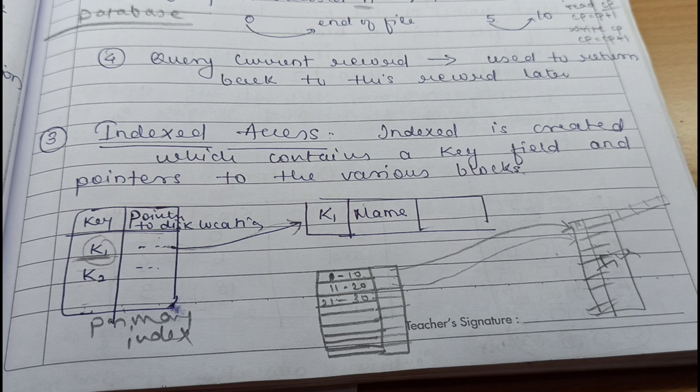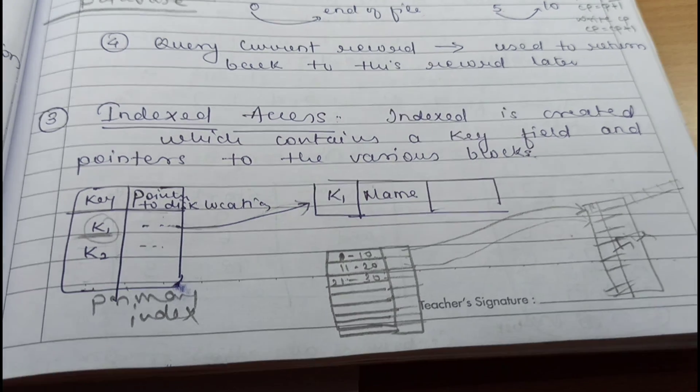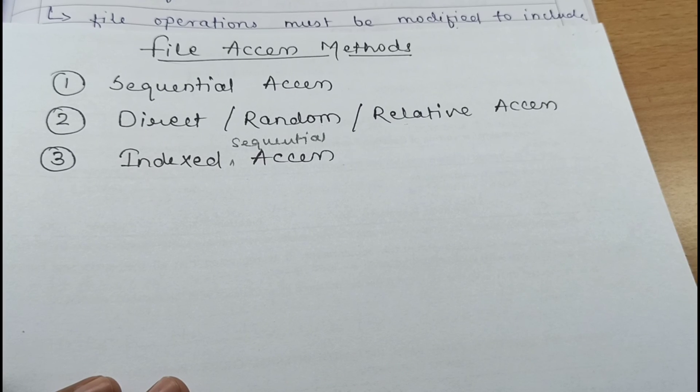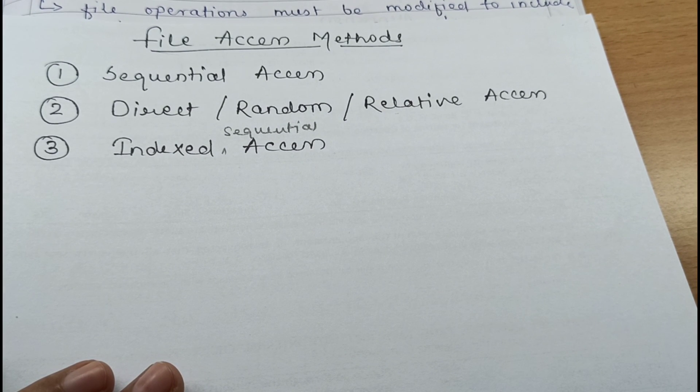So these are the three access methods available with files that we have discussed: sequential access, direct access, and indexed sequential access. Thank you.